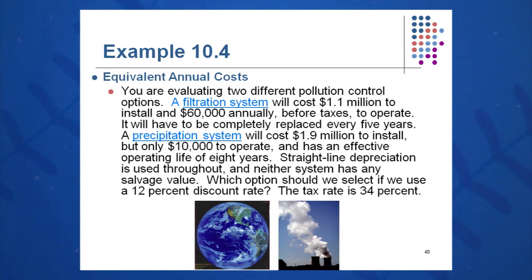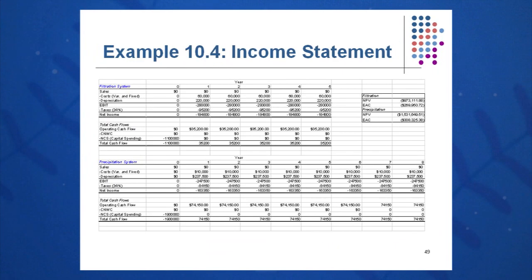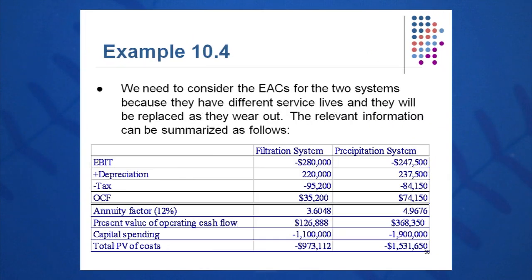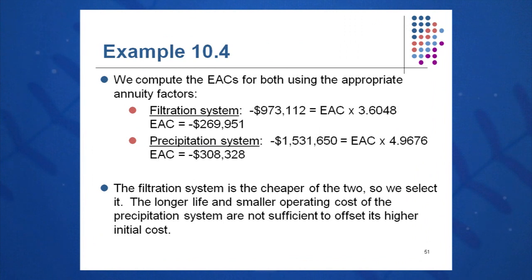Since we can only choose one system, we calculate the EAC for each. The process: income statement, balance sheet, cash flow — sales are zero, subtract operating costs and depreciation straight line over each system's useful life. After calculating OCF, we find the total present value of costs and divide by the annuity factor to get EAC. For the filtration system, total NPV of costs equals negative $973,000, divided by the annuity factor of 3.6048, giving an EAC of approximately negative $270,000 per year.